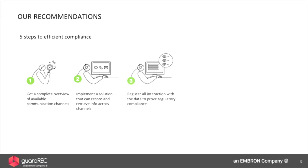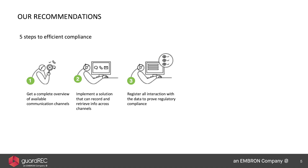The third step is to register all interactions with the data to prove regulatory compliance. Data security is a central theme in both MIFID 2 and GDPR. In MIFID 2, classified information must never be accessed by unauthorized persons, and no one should be able to modify or delete data in an audit trail. This is why it is critical that you can track who has seen, listened, or retrieved data through the whole life cycle, giving you a comprehensive audit trail which complies with the requirements in MIFID 2.